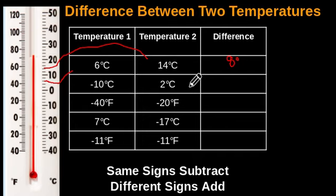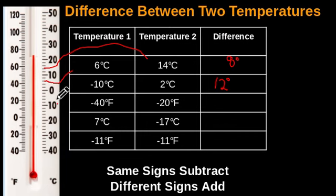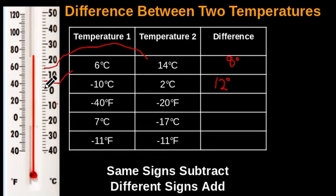Let's try negative 10 degrees Celsius and 2 degrees Celsius. This is negative, this is positive — different signs, so we add. To find the difference, we add the two values: 10 plus 2, that's 12. So the difference between negative 10 degrees Celsius and 2 degrees Celsius is 12 degrees. To confirm that using the thermometer: negative 10 is right here, and 2 degrees Celsius — remember each line reads 2 — is right here. Counting from negative 10 up to 2 degrees Celsius: 2, 4, 6, 8, 10, 12. So you see, it's the same thing.